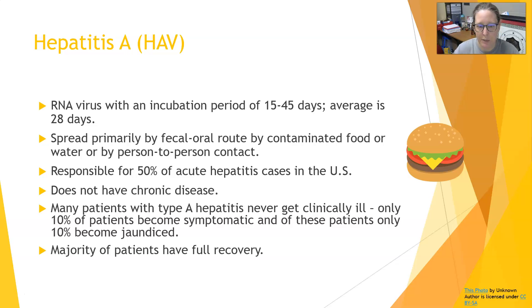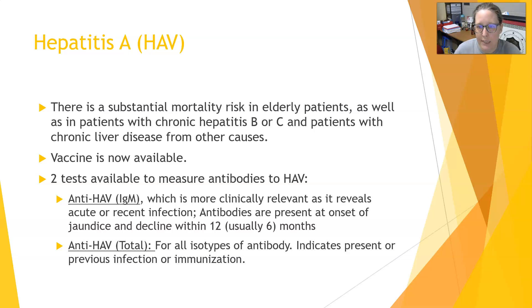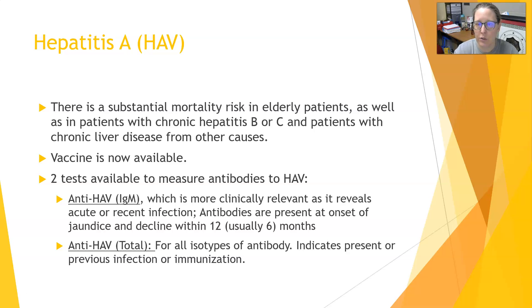Only 10 percent of patients become symptomatic, and of these only 10 percent become jaundiced, with the majority having full recovery usually within a couple of months. There is a substantial mortality risk in elderly patients, in patients with chronic hepatitis B or hepatitis C, and in patients with chronic liver disease from other causes. There is now a vaccine available; children born in the mid to late 90s and early 2000s received it as part of their childhood series, though older generations often were not immunized.